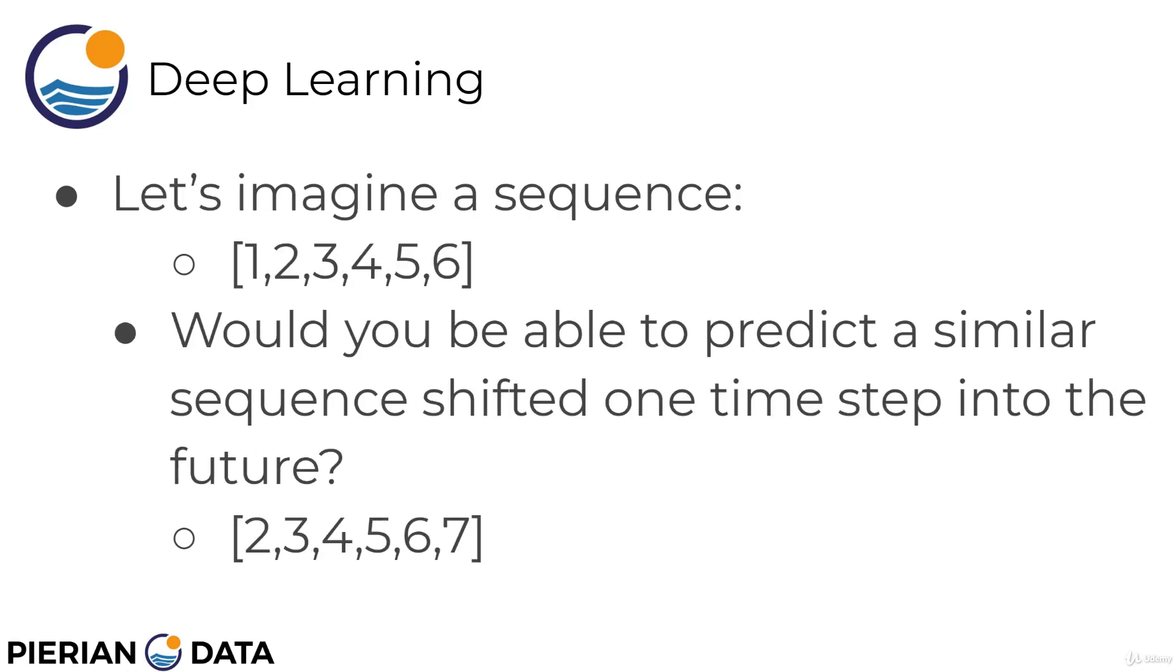So we can imagine something like a very simple sequence of 1, 2, 3, 4, 5, 6. And the question we're trying to answer is, would you be able to predict a similar sequence shifted one time step into the future? Now, if we're reading this as humans, it's probably easy to tell that the next number should be a 7, since it looks like the pattern is just add 1 as you go along. That may not be the correct pattern here, but it's a pretty reasonable pattern to assume here. So we would probably then predict that the next time sequence shifted just one time step into the future, the same number of elements would be 2, 3, 4, 5, 6, 7. So we want to say, are we going to be able to build a network that can learn from that history?